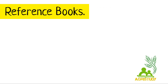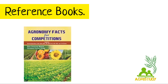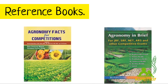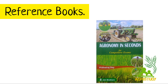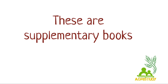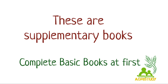Now, for reference books, the most important book is Agronomic Facts for Competition written by R.S. Meena and S.K. Sihag. This book is very helpful for all the aspirants. Along with this, you can go through Agronomy in Brief, a PDF available on the internet, and Agronomy in Seconds written by Pitharas Deh. Remember, these books are mainly supplementary. You should first go through all the basic books and then come to the supplementary ones.